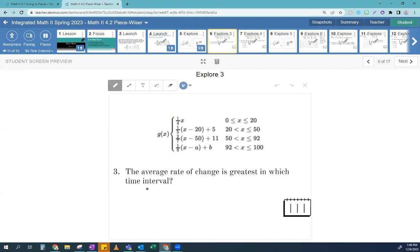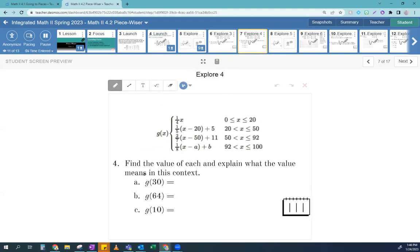Let's move on to the next question. It says the average rate of change is greatest in which time interval. Sorry. I forgot that I was going to skip that one. Find the value of each and explain what the value means in this context. This is what we focused on last class period, right? So you should be able to understand what G of 30 means.